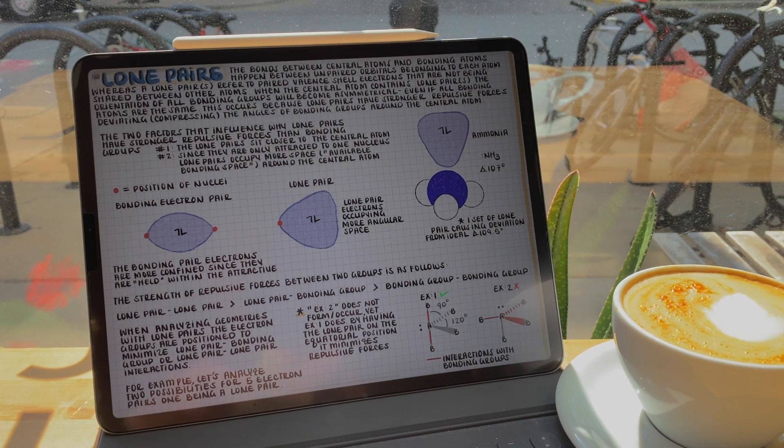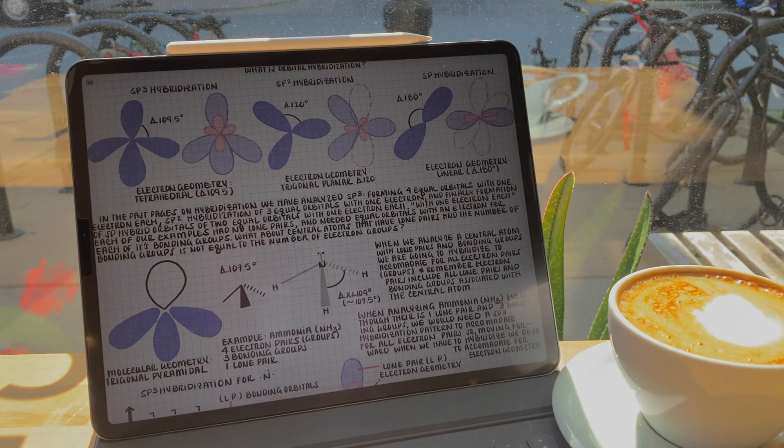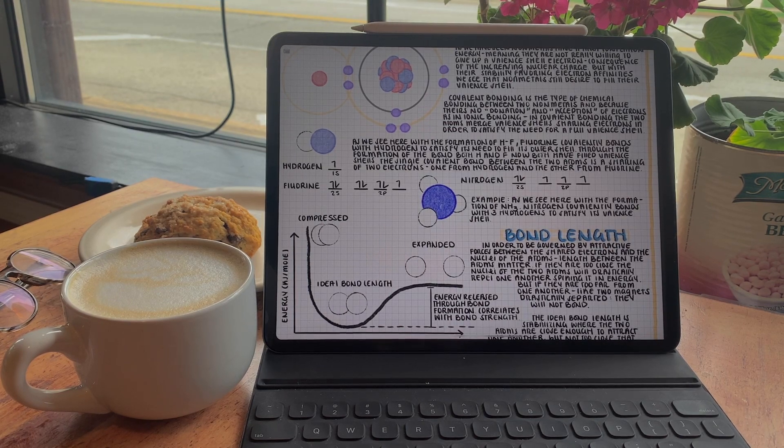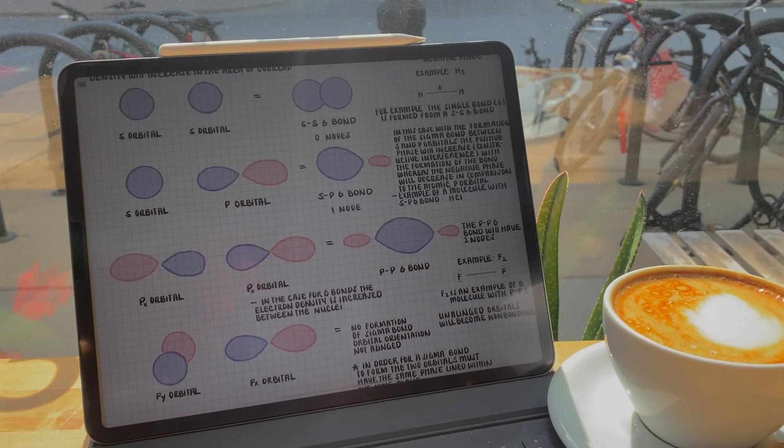We saw how lone pairs repel bonding groups, impacting the symmetry and the geometry of the molecule. Yet, VSEPR is a prediction of molecular geometry around that atom, but has no characteristics or description of what is happening with the electrons or atomic orbitals.